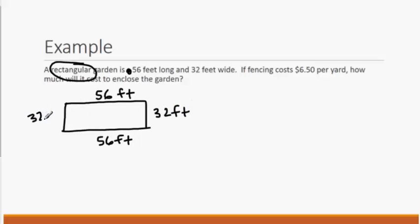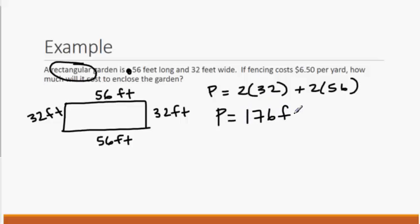And so if we want to find the perimeter, it's going to be 2 times our width plus 2 times our length. 56 plus 32 plus 56 plus 32. And when we do that, we get 176. So our garden, if we were going to put fencing around it, we would need 176 feet of fencing.